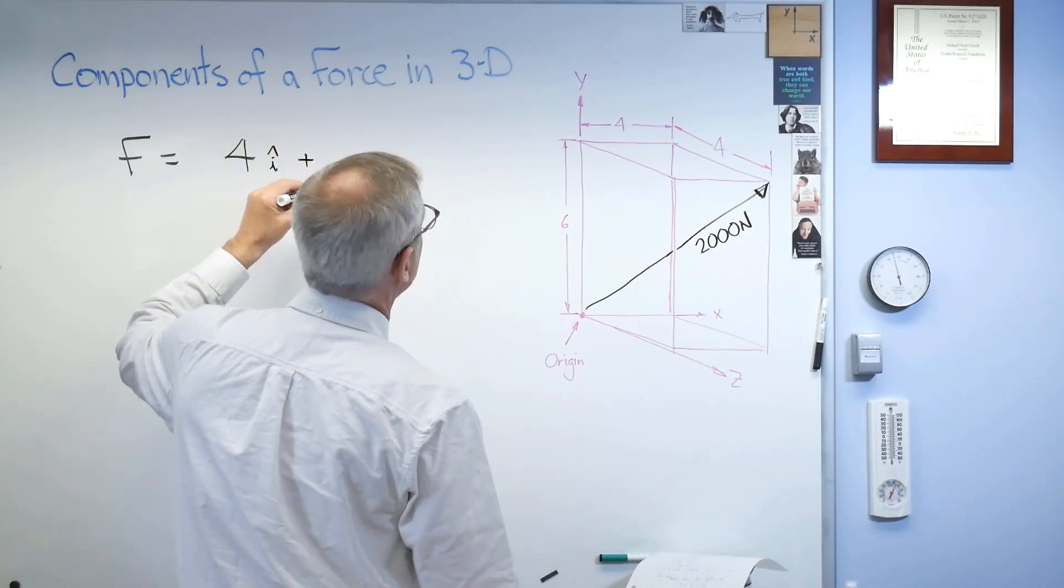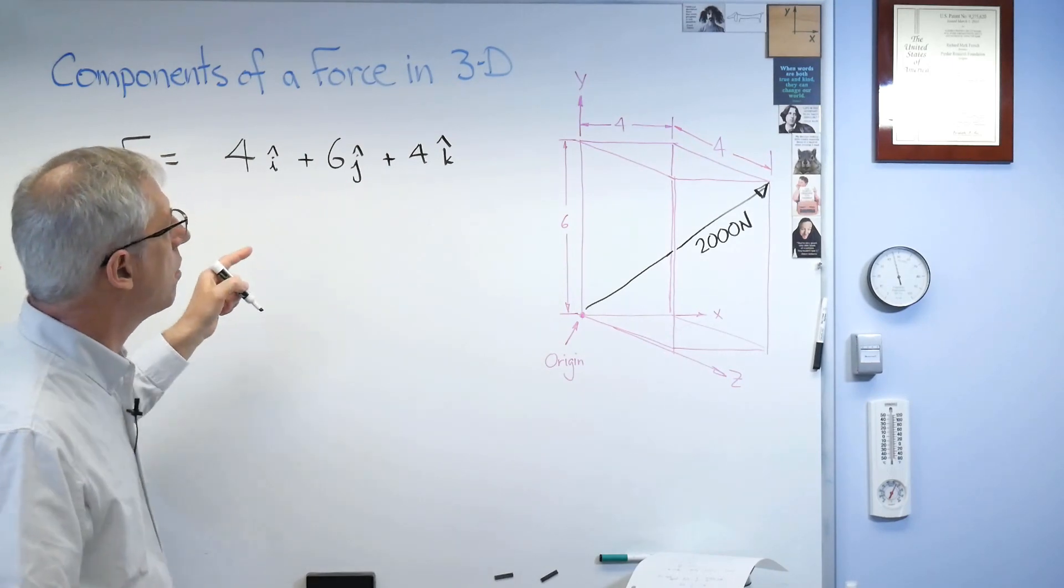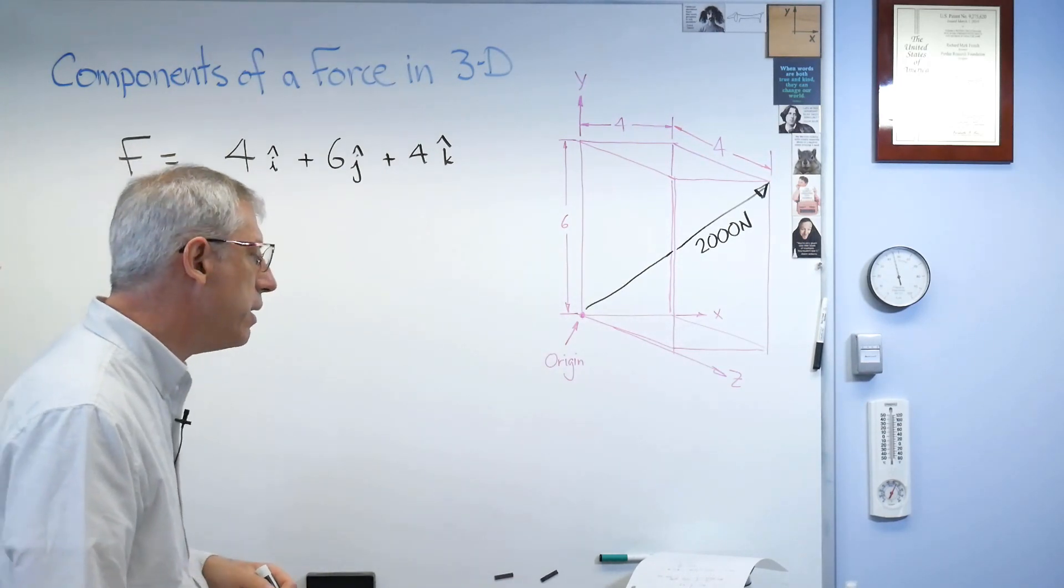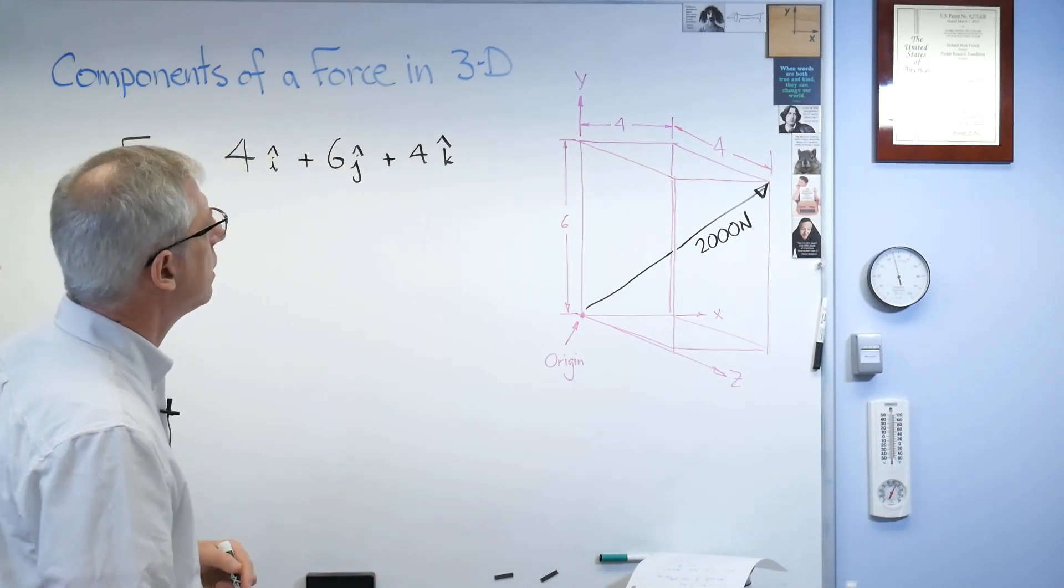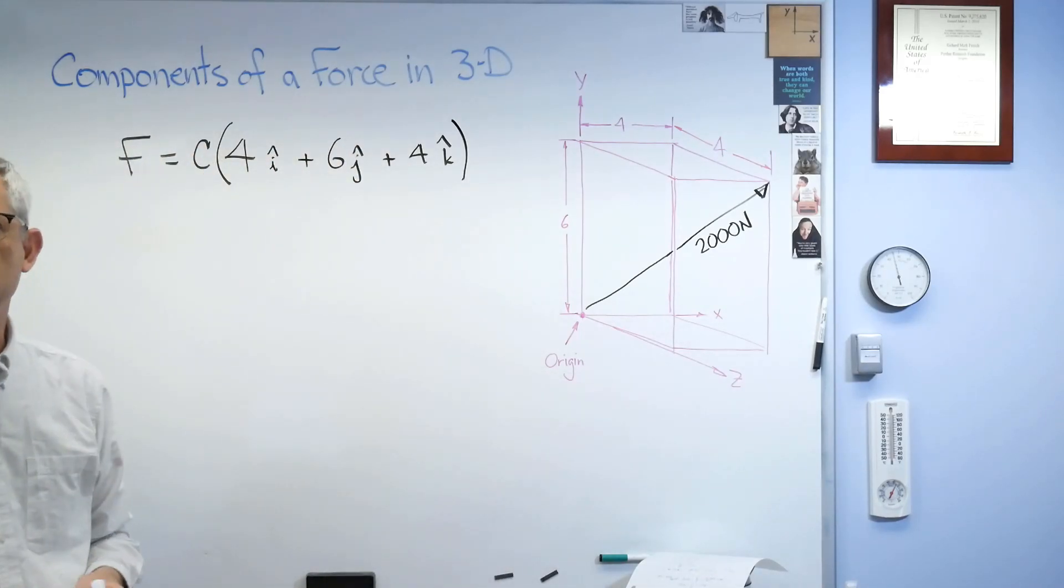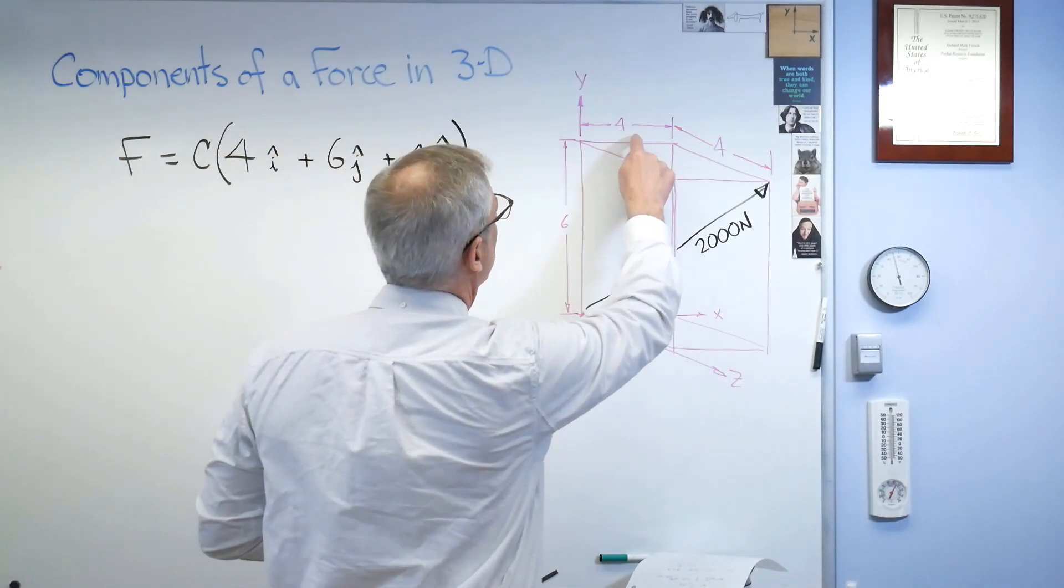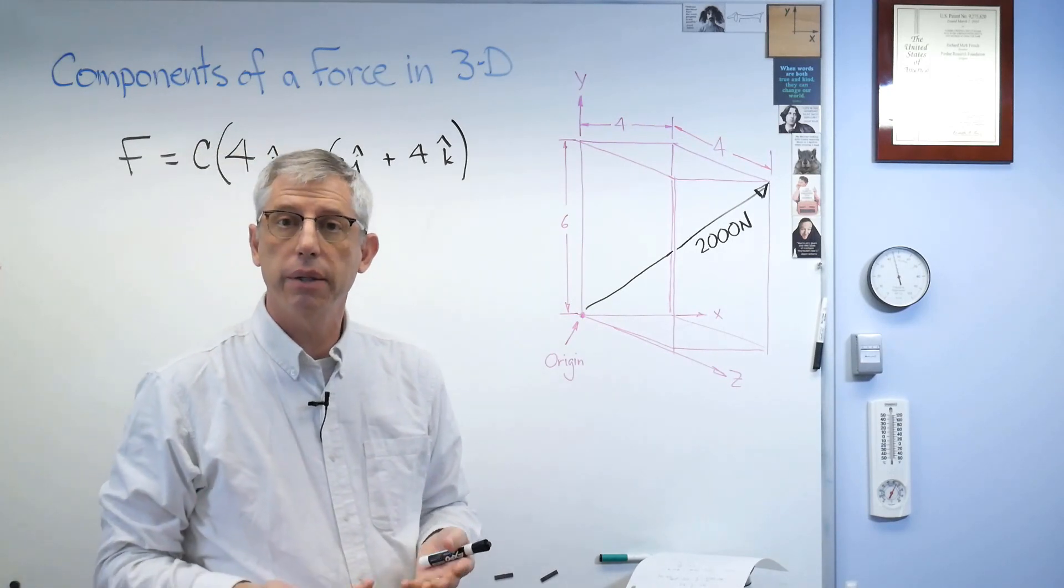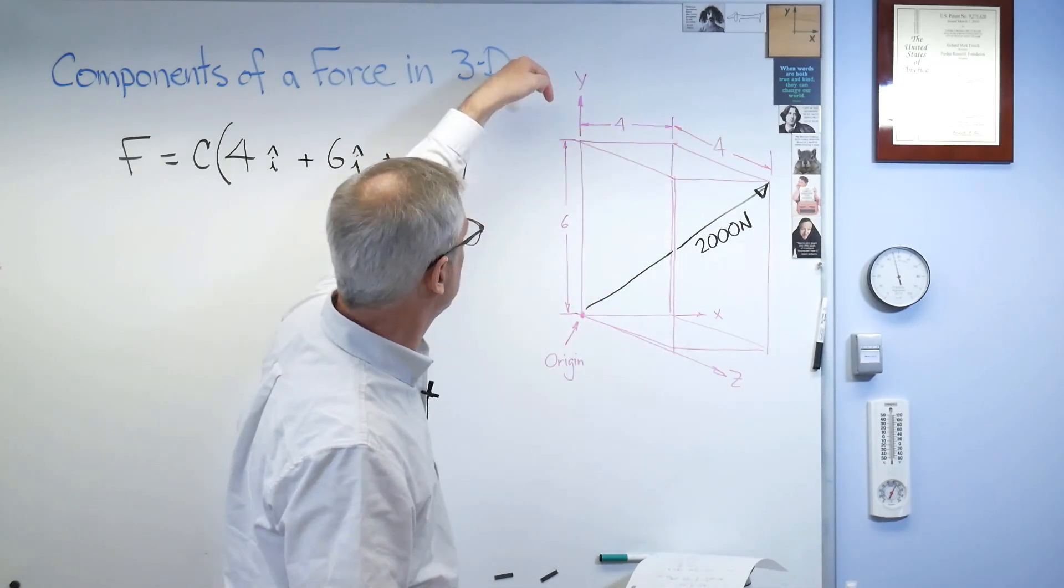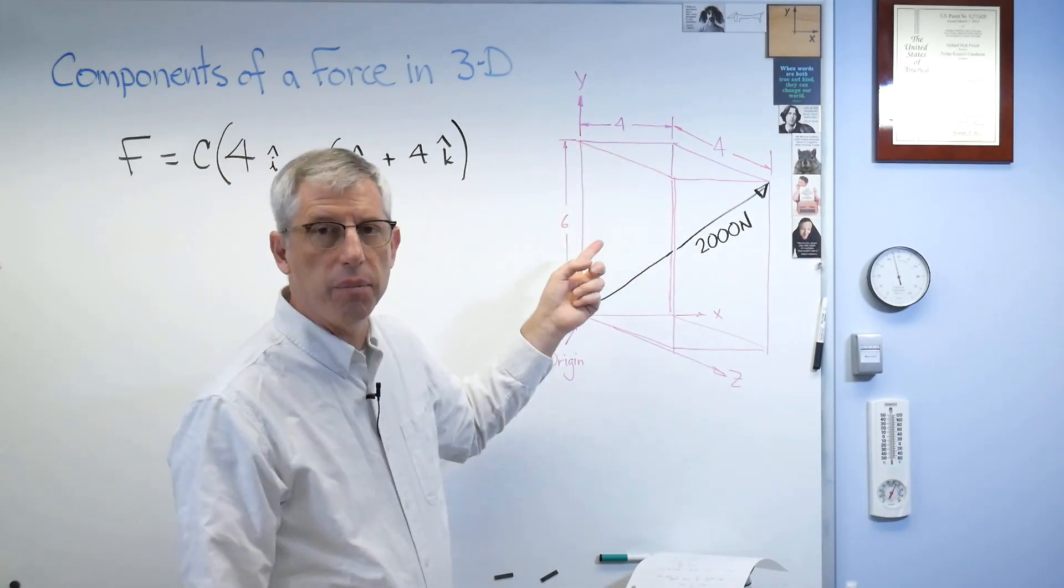If you're unfamiliar with those, I'll tell you about them here in a second. 6 in the j-direction, and 4 in the k-direction. Now, and there's one other problem here. I know the magnitude has to be 2,000 newtons. Well, the magnitude of that isn't 2,000 newtons. I think the magnitude of that is the square root of 68, if I figured it out right. Well, that's not going to do. So there's going to be this coefficient. I'm going to multiply everything in the parentheses by that c, and we'll figure out what c is here in a second.